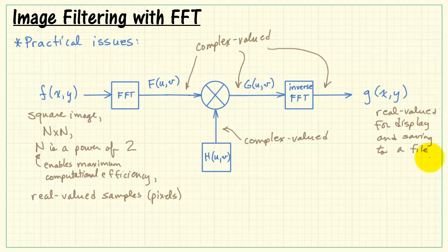Now we'd like the output image to also have real values for purposes of display and also saving to a file. For that reason, we use the magnitude of the complex values to produce the finished result, lowercase g.